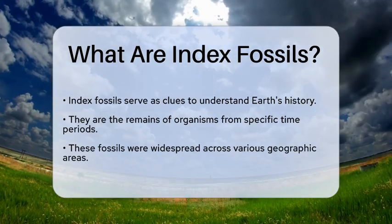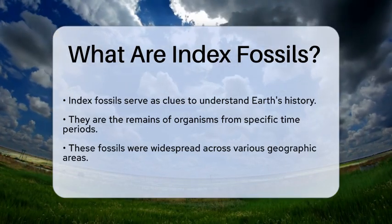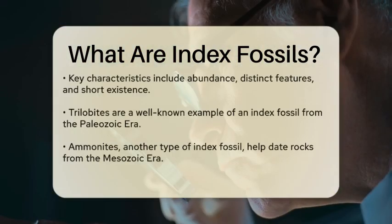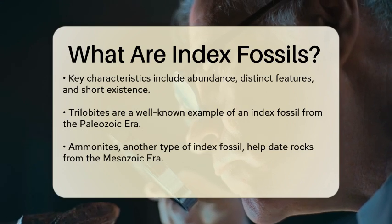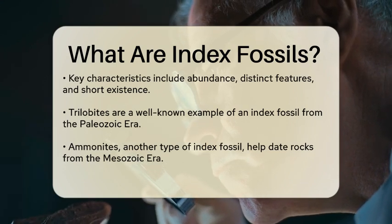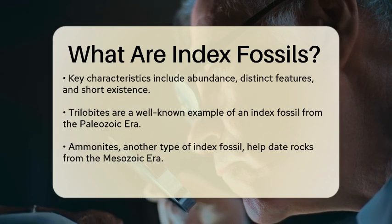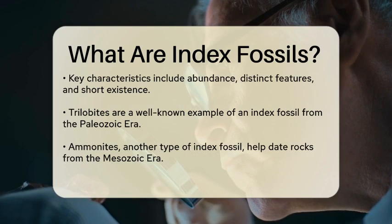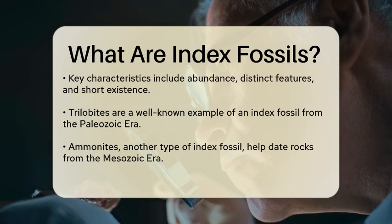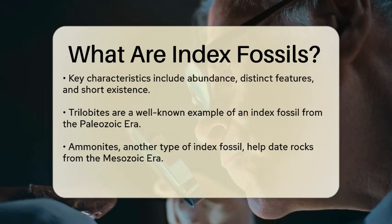Index fossils are the remains of organisms that lived during a specific time period and were widespread across different geographic locations. These fossils are particularly useful for dating the layers of rock in which they are found. The key characteristics of index fossils include their abundance, distinct features, and the relatively short time span during which they existed.